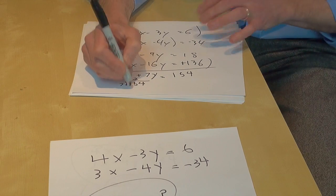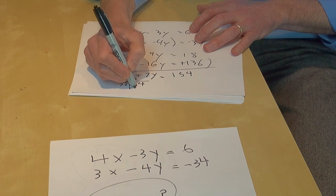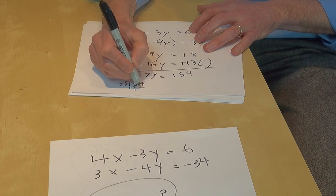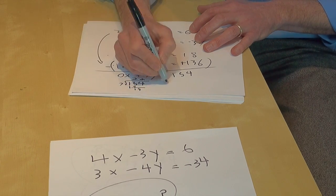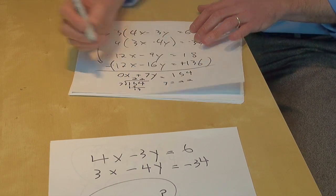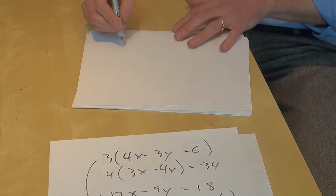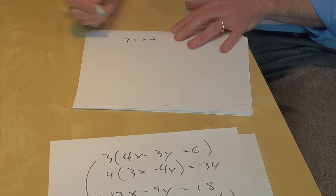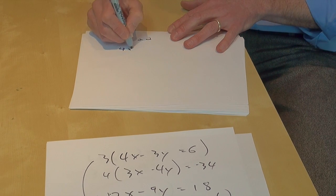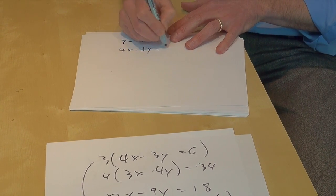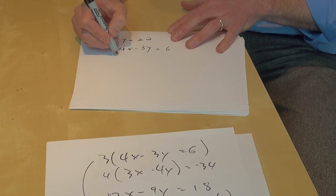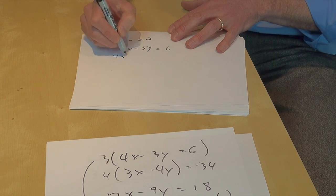Okay, great. 154 divided by 7 - use a calculator if it's a calculator section - gives me 22. Awesome, y is 22. Next page. If y is 22, we need to find x, so let's use our first equation.